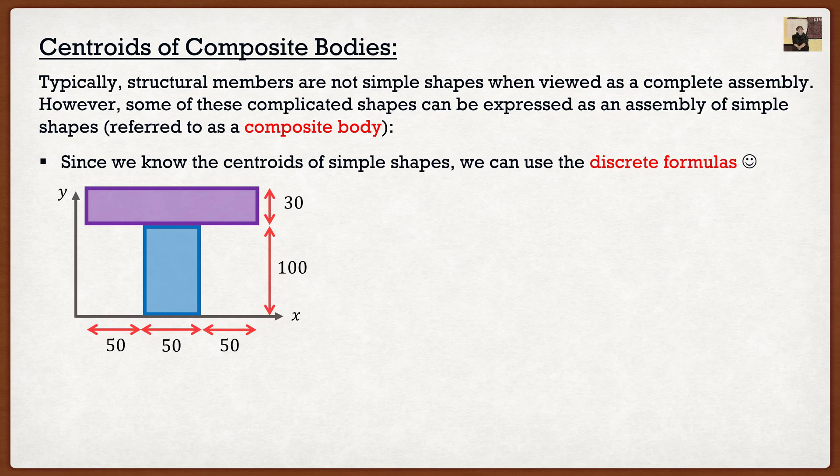And then they'll ask you for something like, what is y bar? Well, if that's the case, and you know that your assembly here, it's just a bunch of simple shapes. That's your hint to go to the discrete formula, which is the summation of ai times y squiggle i divided by the summation of ai. A is just going to be the area of the shapes. And y squiggle is going to be the distance from the axis to the centroid of those shapes. Again, we know the centroid of a rectangle. That's nice and easy for us.